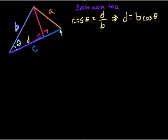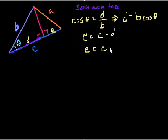Now let's call this side E, right here. What's E? Well, E is this whole C side minus this D side, right? So E is equal to C minus D. We just solved for D. So side E is equal to C minus B cosine of theta.